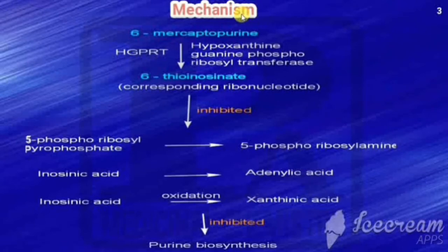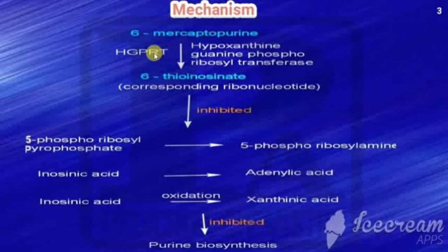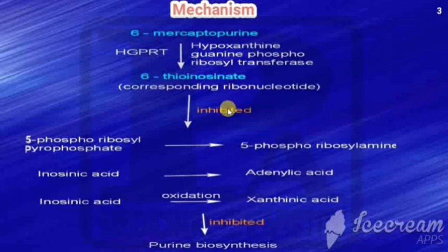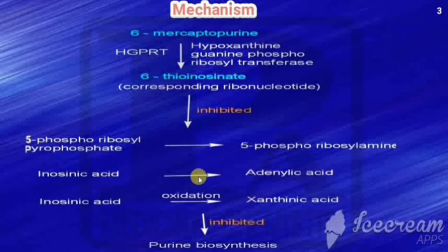Now we will see the mechanism of action of 6-mercaptopurine. It is a purine anti-metabolite. The drug is converted into its corresponding ribonucleotide called 6-thioinosinate by the enzyme HGPRT (hypoxanthine-guanine phosphoribosyl transferase). 6-Thioinosinate inhibits three reactions: the conversion of 5-phosphoribosyl pyrophosphate into 5-phosphoribosylamine, the conversion of inosinic acid into adenylic acid, and the oxidation of inosinic acid into xanthylic acid.